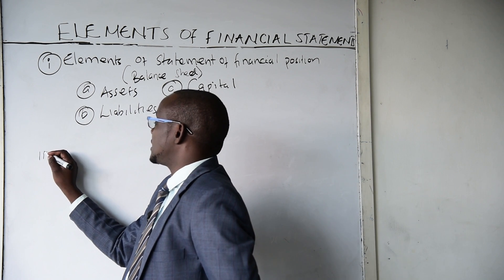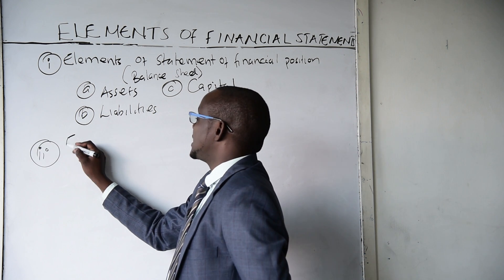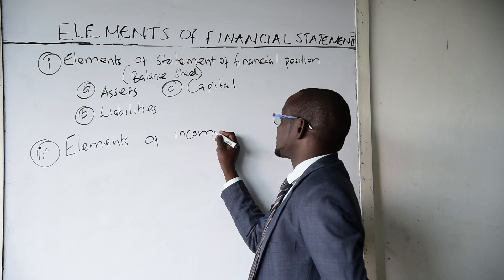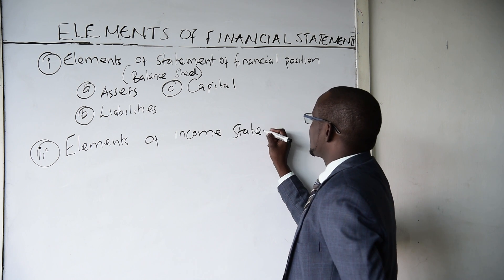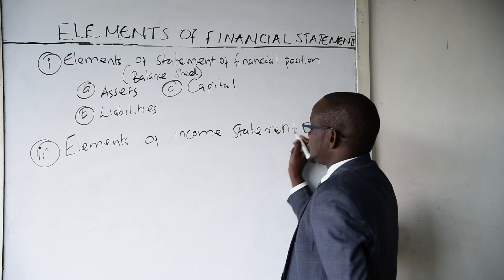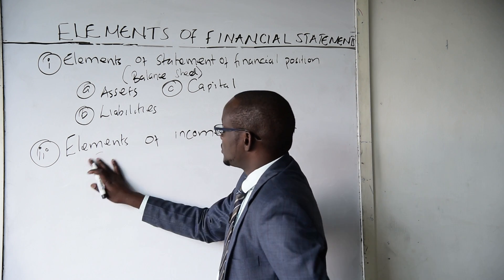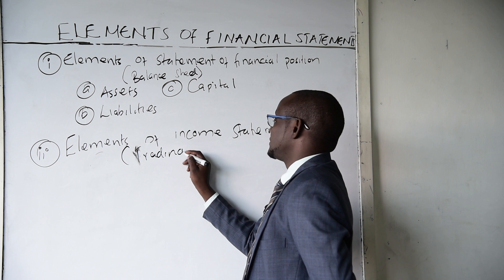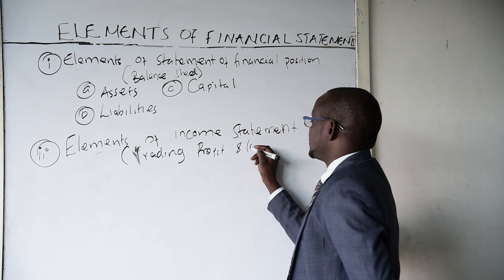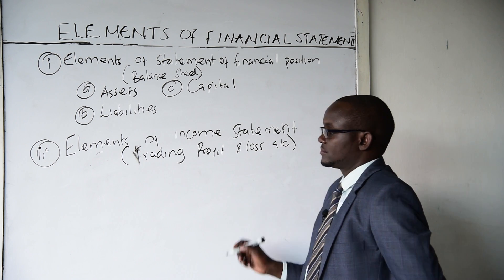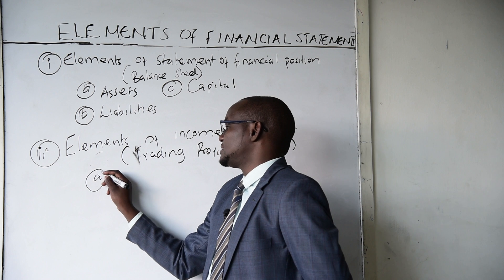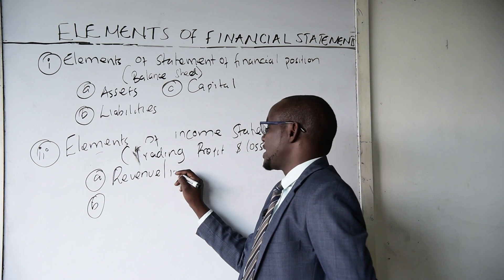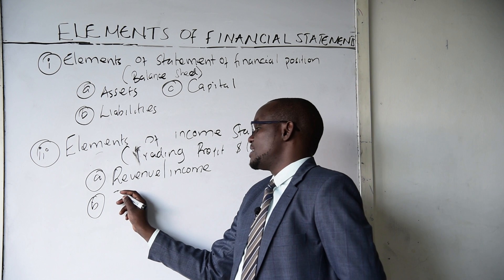The second financial statement that I want us to discuss is the elements of the income statement. This is what was previously called the trading, profit, and loss account. It has two major elements: we have what we call revenue or income, and then we have expenses.